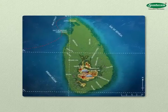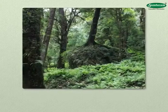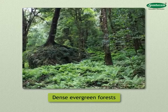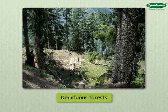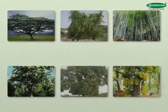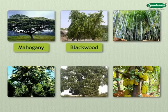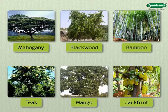The rainfall is heavier in the mountainous region of the country, hence it is covered with dense evergreen forests of the equatorial type. There are deciduous forests in the low rainfall areas, whereas grass is found in the scanty rainfall areas. Trees seen in the forest include mahogany, blackwood, bamboo, teak, mango, jackfruit, etc. Eucalyptus trees are planted on the mountain slopes.